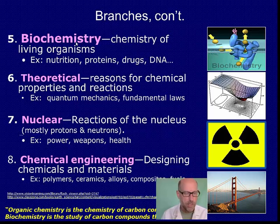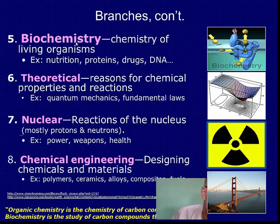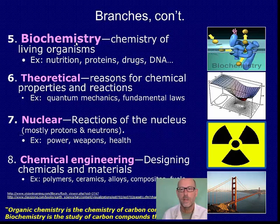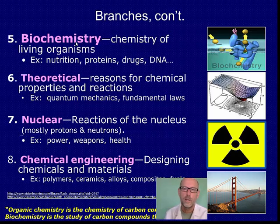Theoretical chemistry tries to get at the reasons for chemical properties and reactions — for example, why a molecule has a tetrahedral shape. Theoretical chemists use quantum mechanics and equations like E = mc², and they're trying to understand the fundamental laws of chemistry.